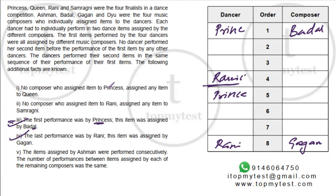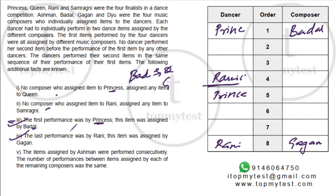The first clue says no composer who assigned an item to Princess assigned an item to Queen — so Badal cannot give a composition to Queen. The second clue says no composer who assigned an item to Rani assigned an item to Samaragini — so Gagan cannot give a composition to Samaragini.